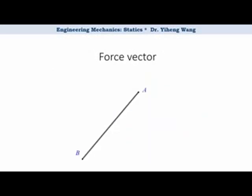We can also express force vectors as Cartesian vectors. For example, for the tension force F in the cable directed from point A to point B, we know that we can express it as its magnitude multiplied by a unit vector that describes its direction.